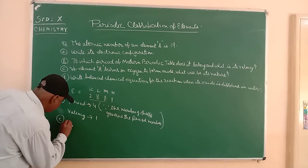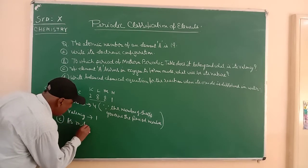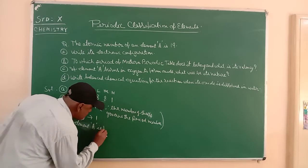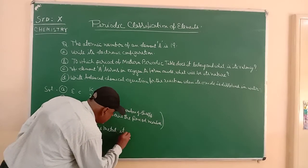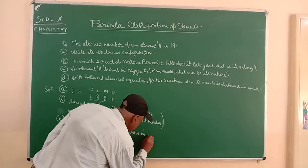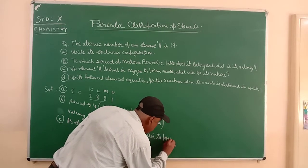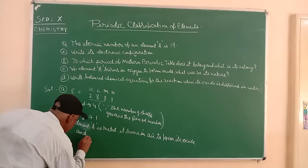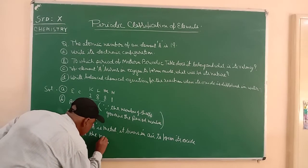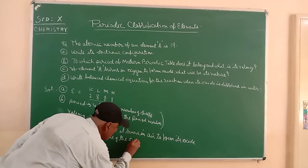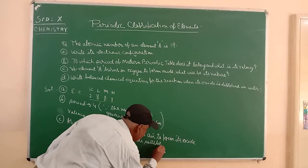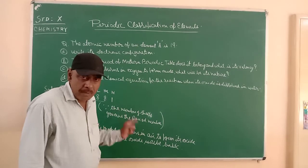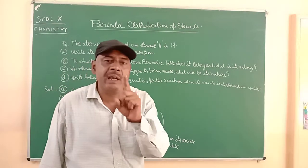As metal A burns in air to form its oxide, metal A forms A2O, and the nature of the oxide will be basic. Why basic nature? Because it's a metal. When it combines with oxygen, it forms a metal oxide and metal oxides are always basic in nature.